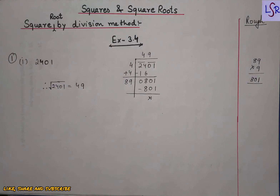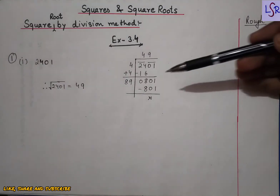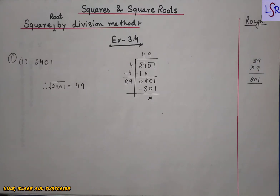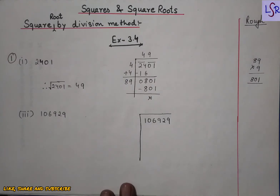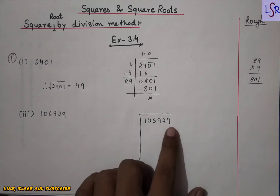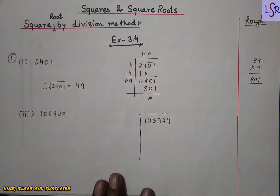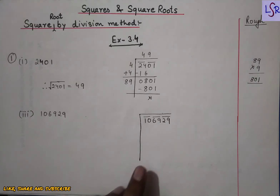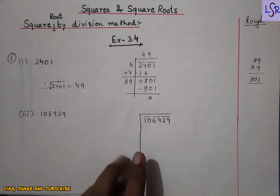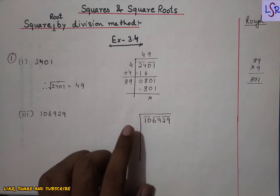This is the way we find the square root of a 4-digit number, getting the answer in 2 digits. Now we will go for the next question, which is a 6-digit number. On pairing we get 3 pairs, and 3 pairs means the square root will be in 3 digits. We start the process again.